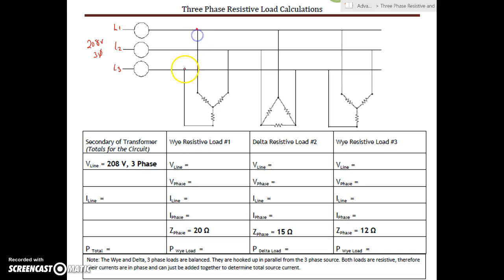So from any line to line, we have 208V. So from here to here, here to here, and here to here, all those voltages are 208V. First step here would be to bring our 208 volts with our line voltage right across.